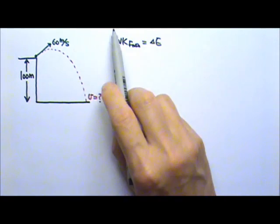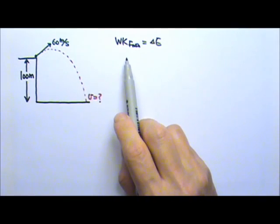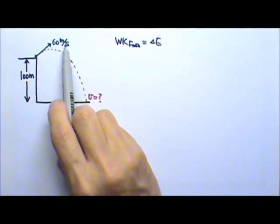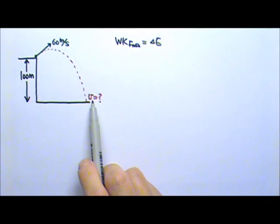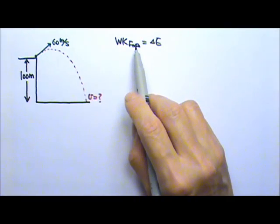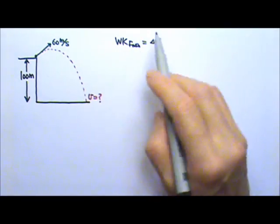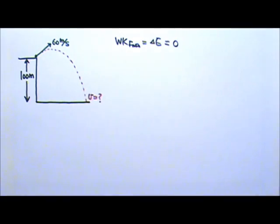This means there are no non-conservative forces doing work, because while the projectile is in the air, the only force that acts on the projectile is the conservative gravitational force mg. There is no work done by any non-conservative forces, so the delta E is zero.